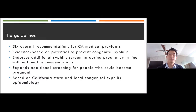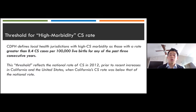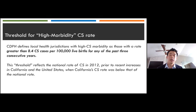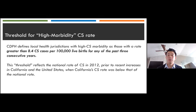These guidelines include six overall recommendations for California medical providers—three focused on pregnant patients and three focused on people who could become pregnant. CDPH defines local health jurisdictions with high congenital syphilis morbidity as those with a rate greater than 8.4 congenital syphilis cases per 100,000 live births for any of the past three consecutive years. This threshold reflects the national rate of congenital syphilis in 2012, prior to recent increases, when California's rate was below the national rate, and it is established as a goal for CDPH to return to this rate.